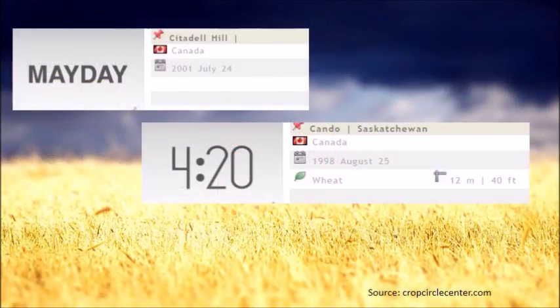Many people have asked why highly advanced circle creators had to use crop circles to send messages to us. Why don't they just send us something in plain English? Well, actually they did. On July 24, 2001, Mayday appeared in Citadel Hill, Canada. That was 48 days before the 9-1-1 attacks.